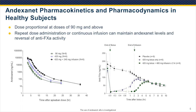The slide on the left shows the andexanet pharmacokinetics, and you can see that there is dose-proportional pharmacokinetics over the dose range from 90 to 420 milligrams. Further, if you look carefully, you can see that a slow infusion will allow you to maintain the andexanet concentrations. On the right graph, you can see the anti-factor Xa activity decreases rapidly upon andexanet administration, while after a bolus that rapidly comes back after the end of administration. The continued infusion allows the maintenance of the reduction in anti-factor Xa activity.